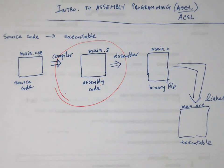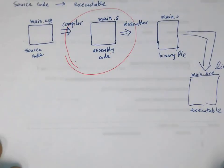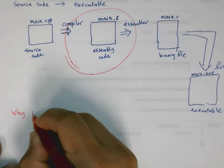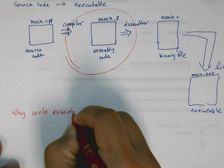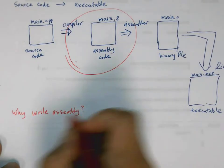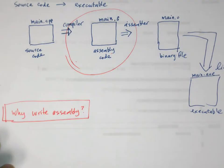Before we get into the specific details of the language, let's talk about why write assembly. Why bother to do this when someone else has sort of figured this out already for us? There's plenty of good compilers available that we can get for free or purchase. So why bother?